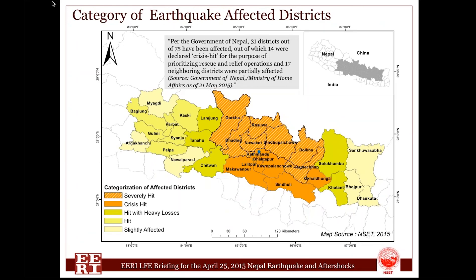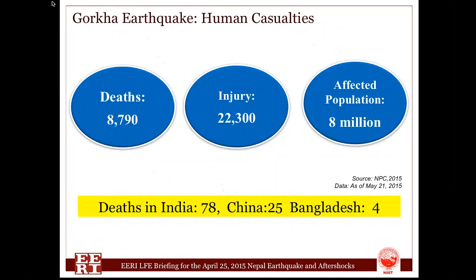The earthquake and several aftershocks caused severe damage in several districts, largely in the central part of Nepal. There are 75 districts in total in Nepal, and out of 75 districts, 31 are badly hit, and among them 14 are crisis-hit districts. As of May 21st, the casualties reported are 8,790 deaths, 22,300 injuries, and 8 million affected population.